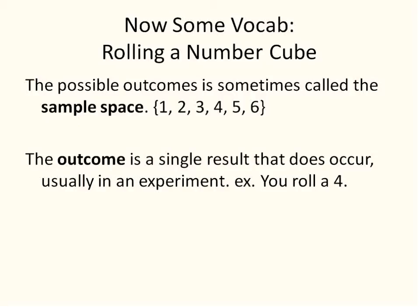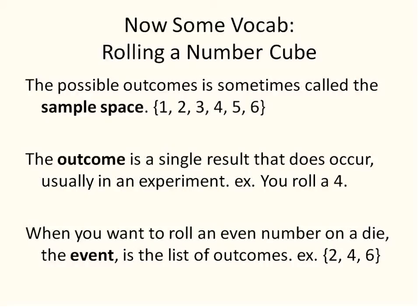The outcome is a single result that actually occurs, usually in experimental probability. For example, you roll a four — the outcome is four. Your sample space is one, two, three, four, five, six — all the possible outcomes. The event is a list of possible outcomes that are favorable to a certain situation. For example, the event of rolling an even number would be two, four, six. If you're spinning and you want blue or red, the event would be blue and red — both favorable outcomes.